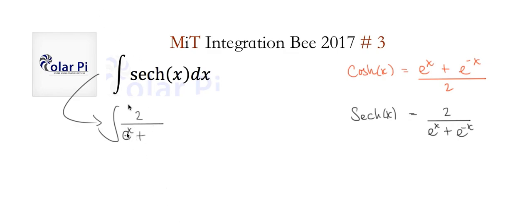This turns to e to the x squared plus 1 all divided by e to the x. But this is the same as putting this e to the x next to that 2 there, so that's what we're going to do.